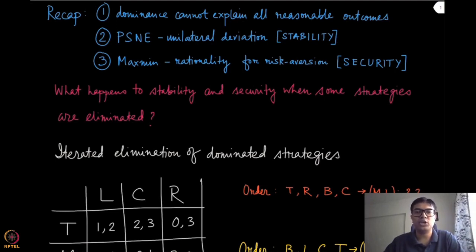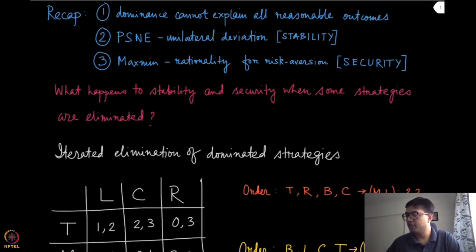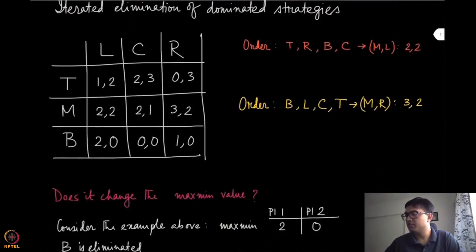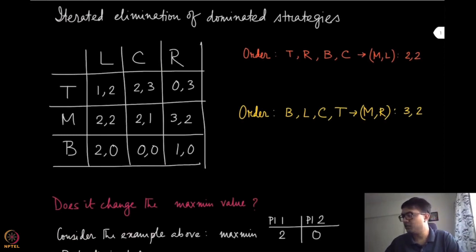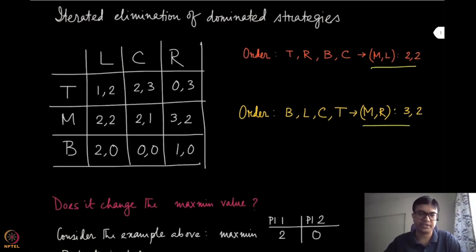We have seen this example earlier: if we remove some of the weakly dominated strategies, depending on the order in which we remove them, we might end up in two different reduced games, and therefore the predictions could be different. But the question is: does it change the maximin value?